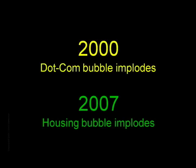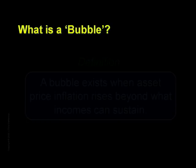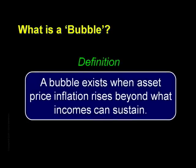So how would we know that we're in an asset bubble? What do they look like and what can we expect when one bursts? The Fed famously likes to claim that you can't spot one until it bursts. But actually you can, and the definition is pretty simple: a bubble exists when asset price inflation rises beyond what incomes can sustain. A bubble represents people abandoning reason and prudence for hope and greed.